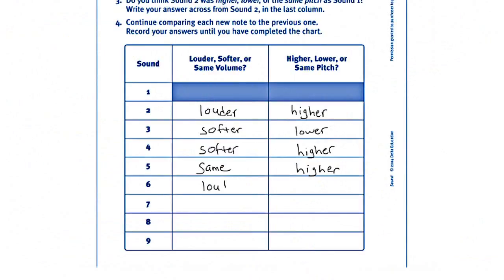Next, give each student a copy of Activity Sheet 8. Explain that you will play notes on the xylophone. After you play each note, they should decide if the note is softer or louder or higher or lower than the previous note.